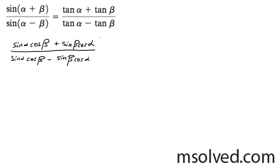Now right here I'm not going to be able to do anything, but there's a trick I can do. In this case I'm going to multiply both the numerator and denominator by one over cosine alpha cosine beta.